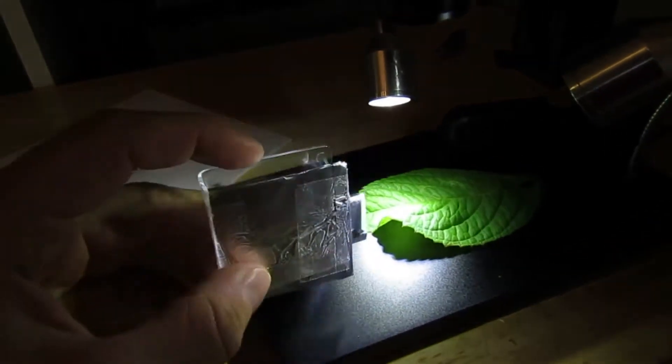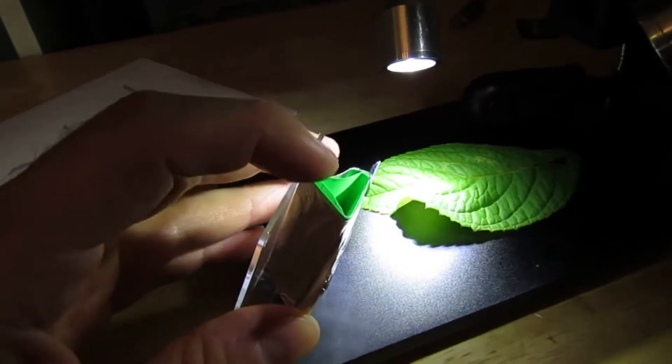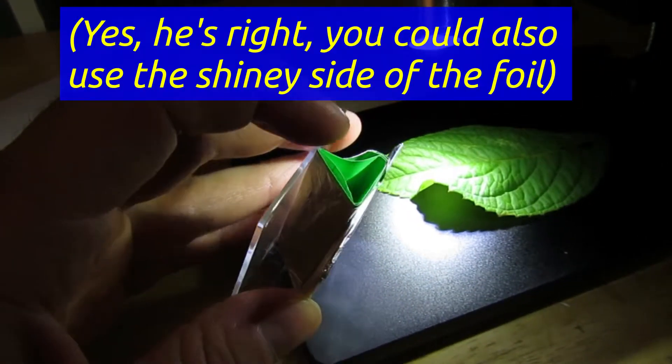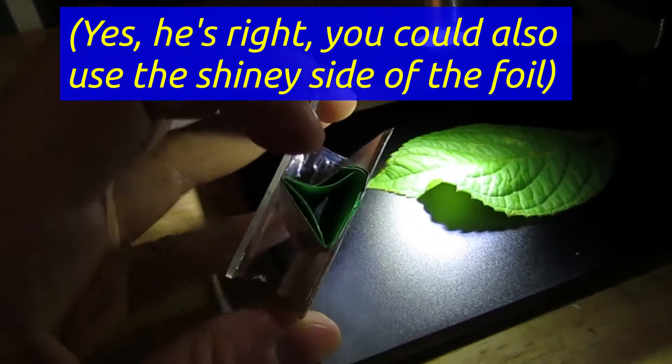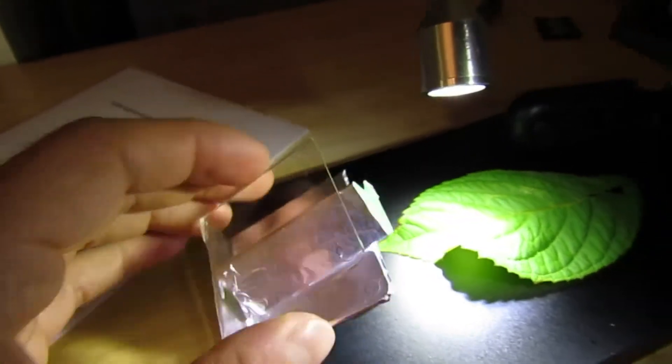We used the not so shiny side here on the back and I just rolled up a piece of three and a half inch card here to fold it into a triangle and tape another piece of aluminum foil onto it so that the lights can bounce off of it.